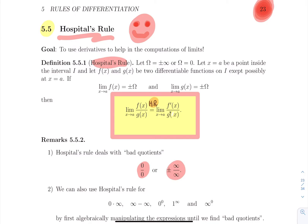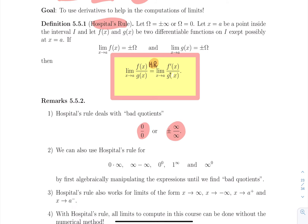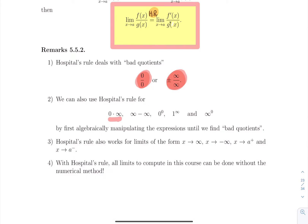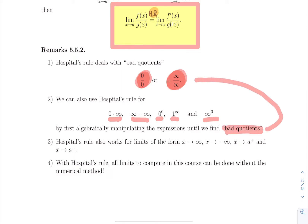Remember: you can only apply L'Hôpital's Rule if you have a form 0/0 or ∞/∞ (up to a sign). For other indeterminate forms — 0·∞, ∞−∞, 0⁰, 1^∞, or ∞⁰ — you can still use L'Hôpital's Rule, but only after manipulating your expression to recover one of the bad quotients. We will be able to deal with all such limits encountered in this course.